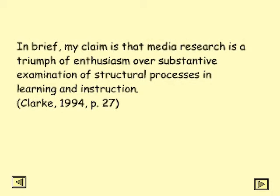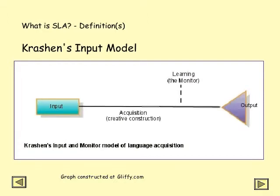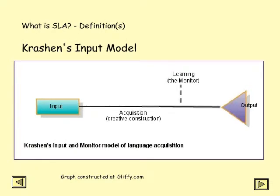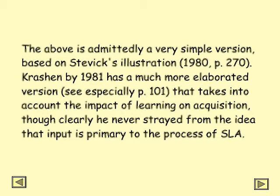What do we know about second language acquisition? I'm sure you're all familiar with Krashen's input and monitor models. There is some input; the learner acquires some parts of this or creatively constructs and adds to his interlanguage. The learning that he undergoes is related mainly to the monitor, which governs what kind of output can be generated. By 1981, Krashen has a much more elaborated version of the input model, and he takes into account the impact of learning on acquisition. He never strayed from the idea that input is primary in the process of second language acquisition.